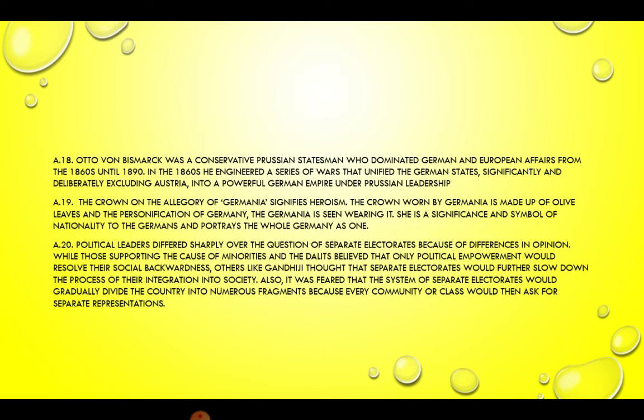Answer 19. The crown on the allegory of Germania signifies heroism. The crown worn by Germania is made up of olive leaves and is the personification of Germany. Germania is a significance and symbol of nationality to the Germans and portrays the whole of Germany as one.